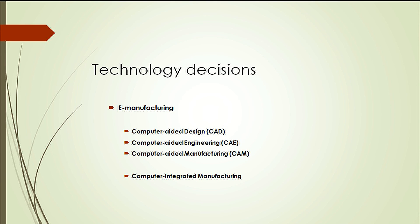Lastly, there is e-manufacturing. Computer-aided design (CAD) is a system that uses computer graphics to design new products. There is also computer-aided engineering and computer-aided manufacturing. Computer-integrated manufacturing (CIM) is a term used to describe the integration of product design, process planning, and manufacturing using an integrated computer system.